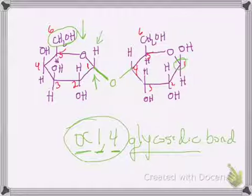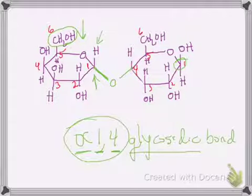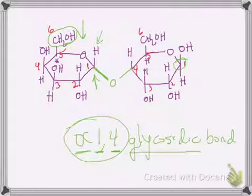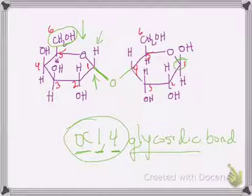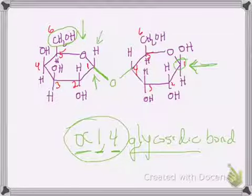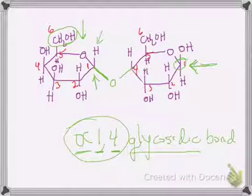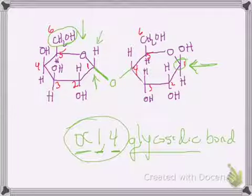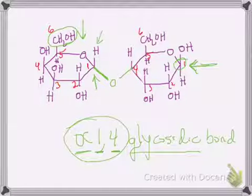Once connected in a glycosidic bond, the sugar's cyclic ring structure is locked and cannot open up and change into the beta form or vice versa. If the anomeric carbon is not in a glycosidic bond, then that one can open and close. So while this disaccharide is formed, the beta configuration can open into the linear conformation, re-cyclize into the alpha form, open up, and re-cyclize back into the beta form, back and forth.